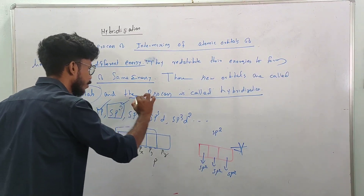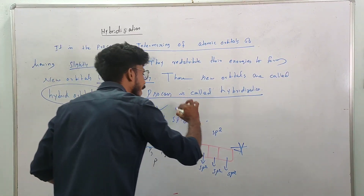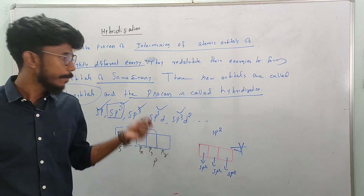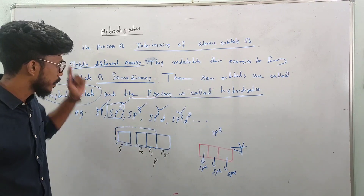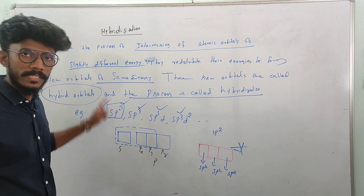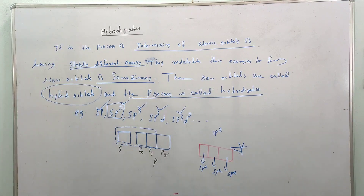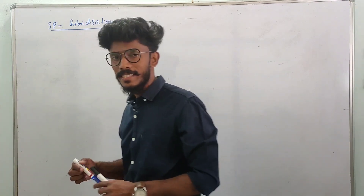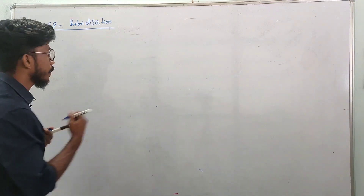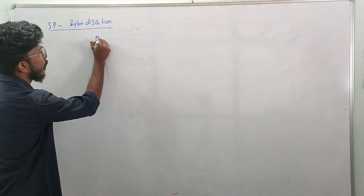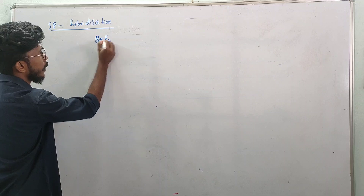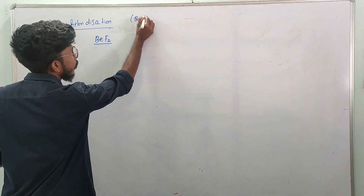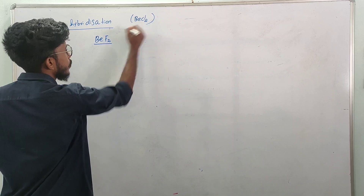Let's start with hybridization. Let's finish one example. Beryllium Fluoride is an SP hybridization example. Another example is BeCl2 — Beryllium Chloride is also an SP hybridization example. Let's discuss BeF2.